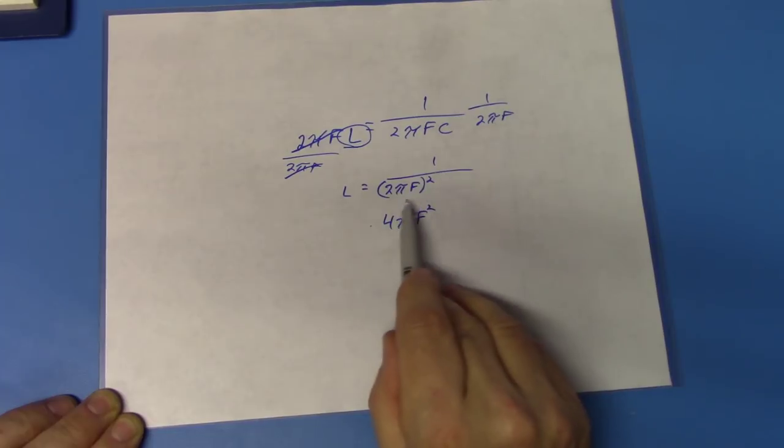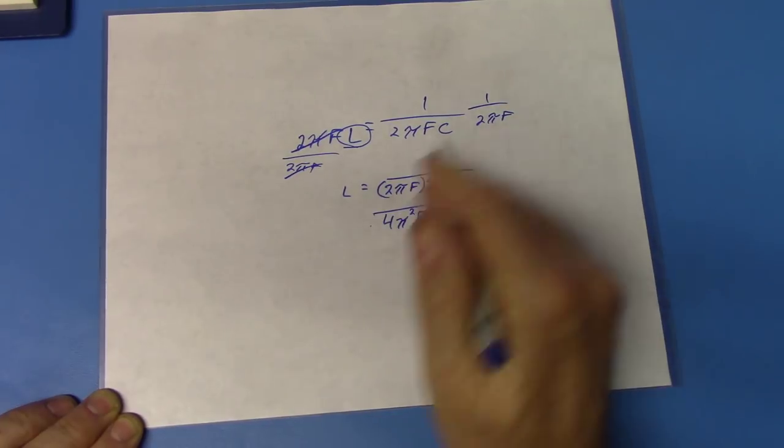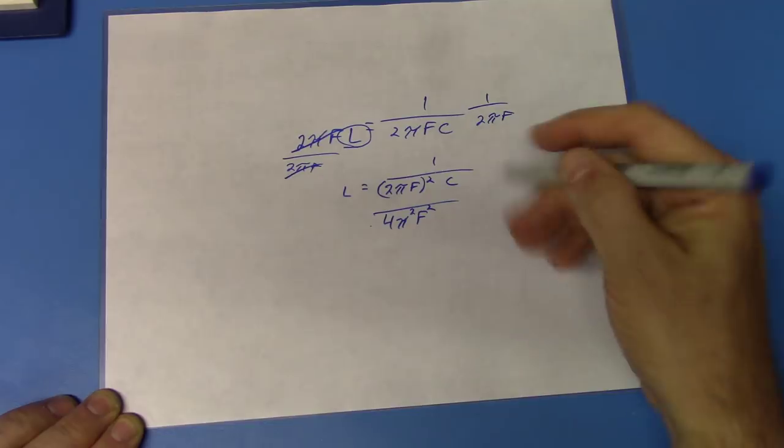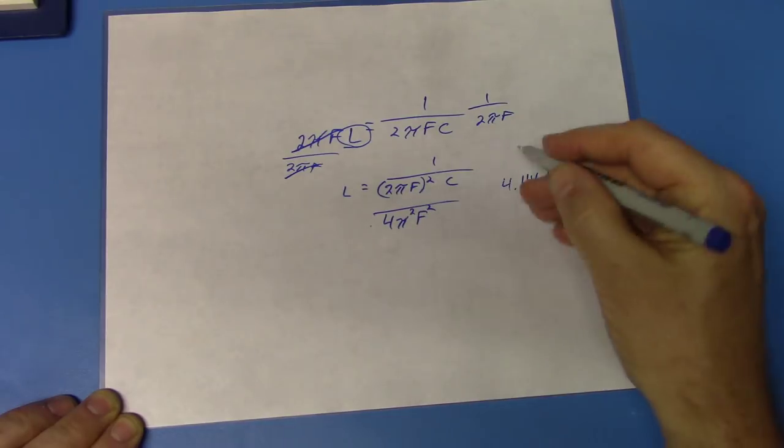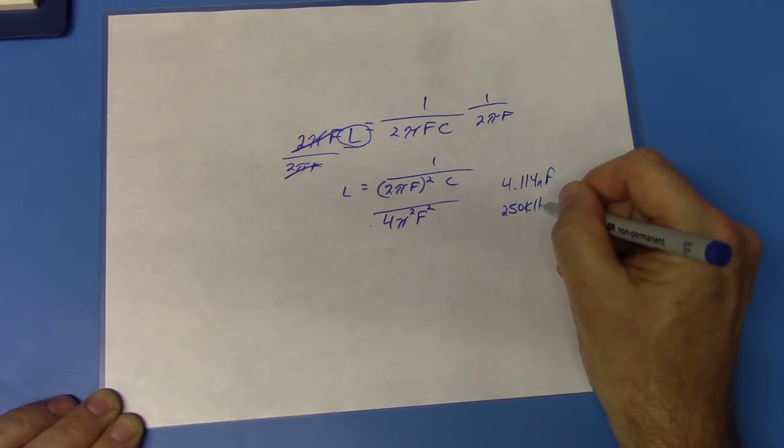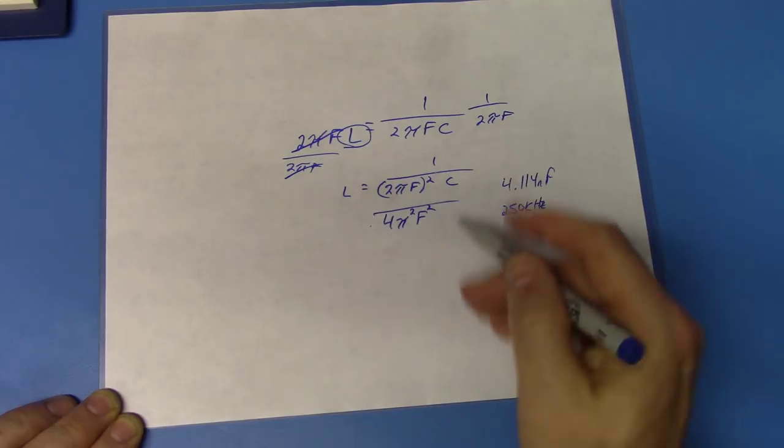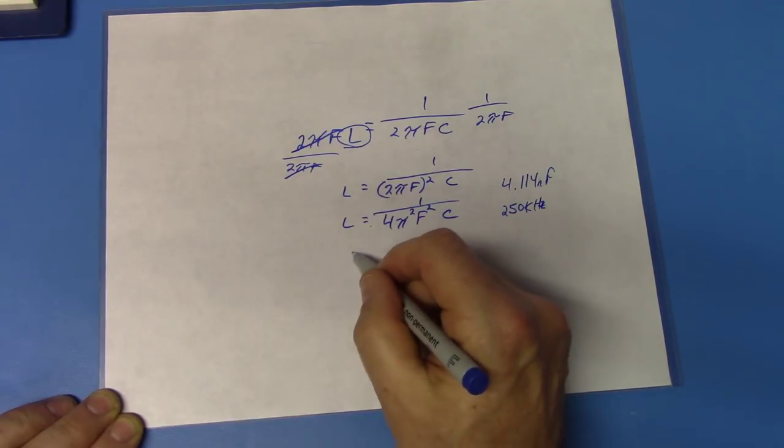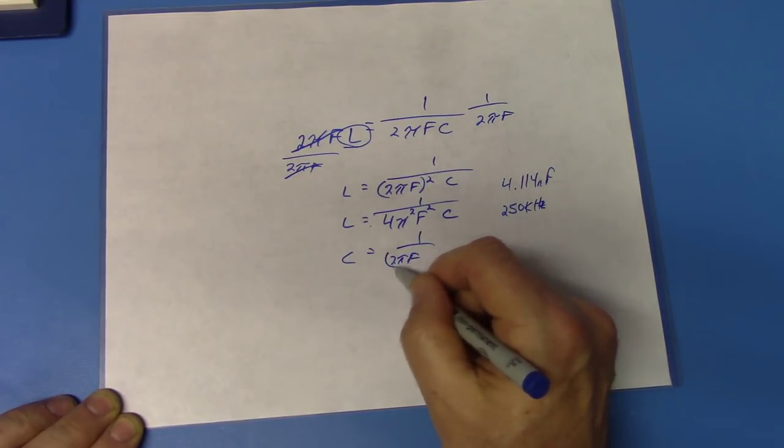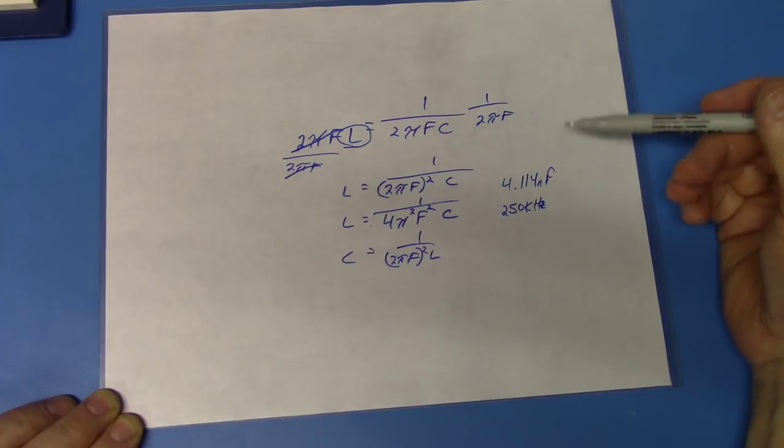We could also say 4 pi squared f squared. But that gets a little bit cumbersome. So this is just an easier way to write it. And then we would have, of course, the value for C. So in this case, if we knew that we had 4.114 nanofarad, and we wanted a frequency of 250k hertz, we could just plug these values into the formula and find out what value of inductor we would need. And, of course, we could do it exactly the same way for a capacitor. It would just be C is equal to 1 over 2 pi f squared L. So it would work either way. And that's actually the way that I came up with the values for my 250k hertz oscillator.